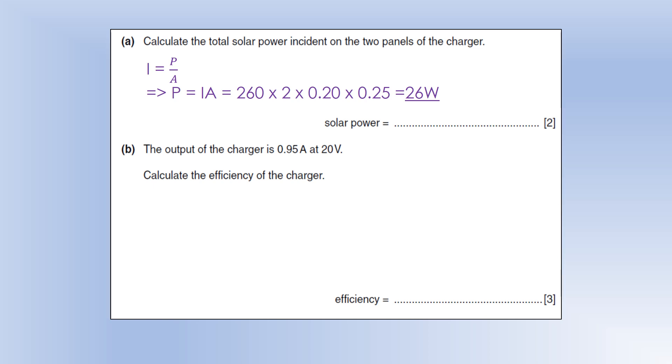The output is 0.95 amps at 20 volts. Calculate the efficiency. First we can work out the output power using P equals IV. That gives us 19 watts. Efficiency is output divided by input, giving us 73% overall.